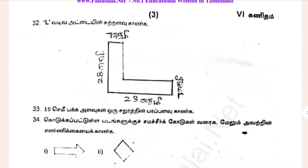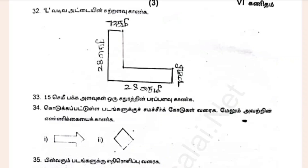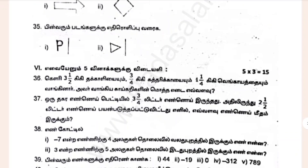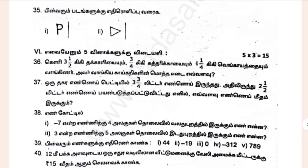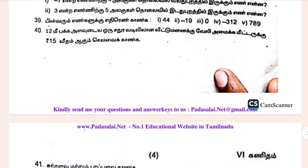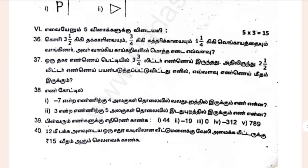We're going to try it now. If you add 3 marks, you can add 3 marks on the mark. 50 is 66.